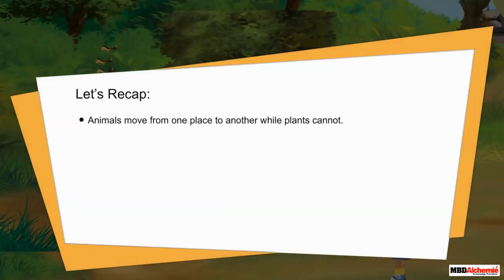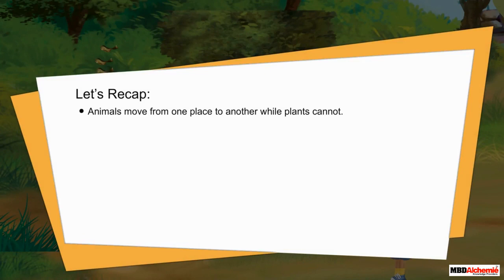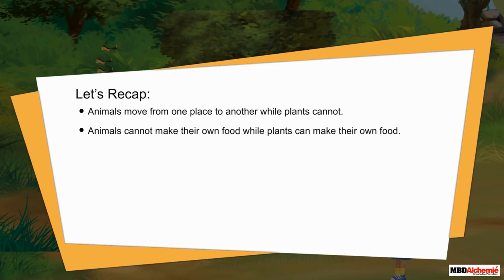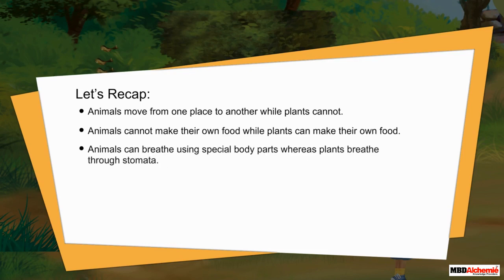Now let's recap. Animals move from one place to another, while plants cannot. Animals cannot make their own food, while plants can make their own food. Animals breathe using special body parts, whereas plants breathe through stomata.